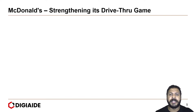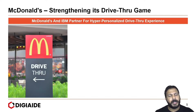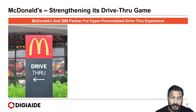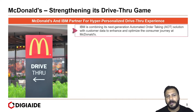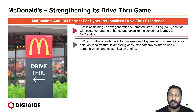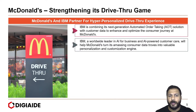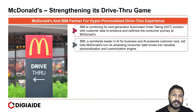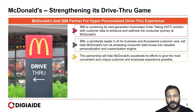The first case study is McDonald's strengthening its drive-thru game. McDonald's and IBM have partnered for a hyper-personalized drive-thru experience — that is, customization while you drive through a McDonald's to place an order. IBM is combining its next-generation automated order-taking solution with customer data to enhance and optimize the customer journey at McDonald's. IBM, a worldwide leader in AI for business and AI-powered customer care, will help McDonald's turn its amassing customer data into a valuable personalization and customization engine.